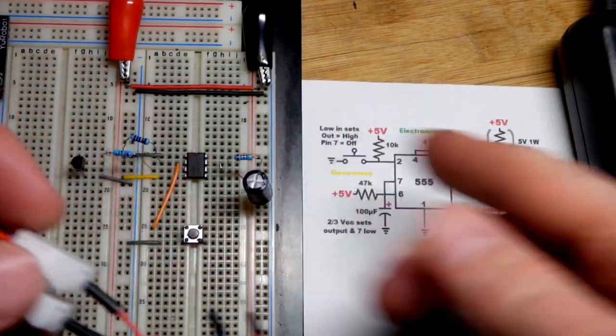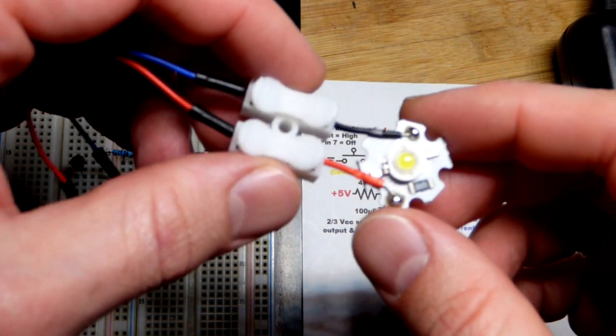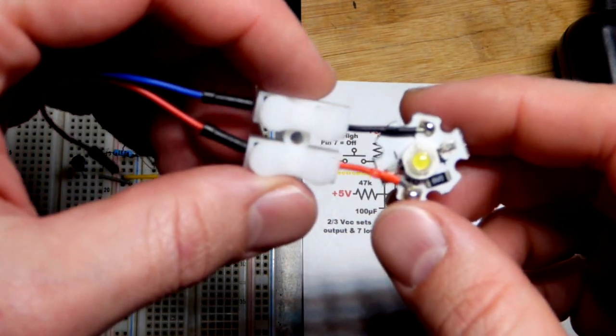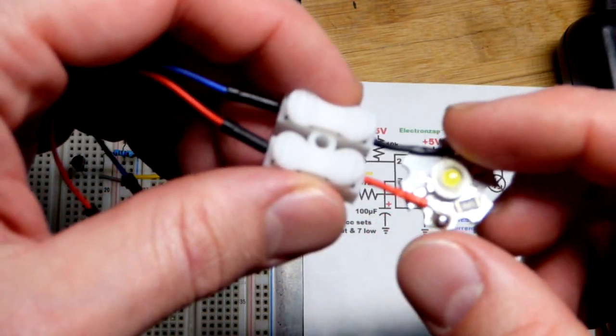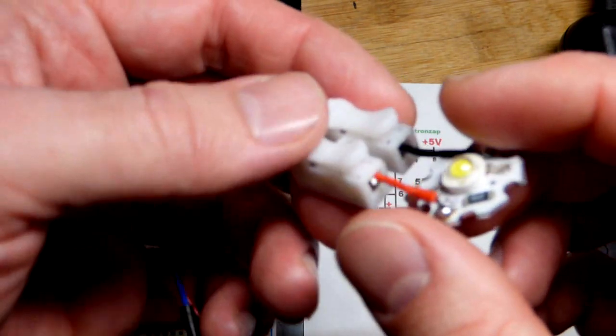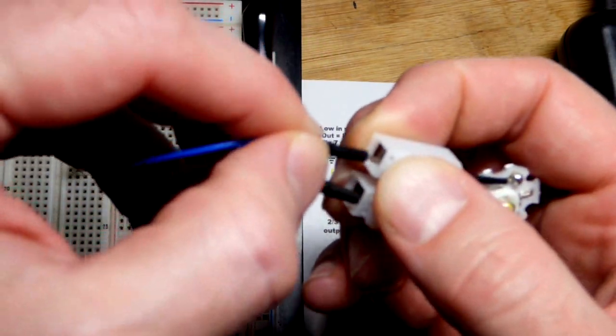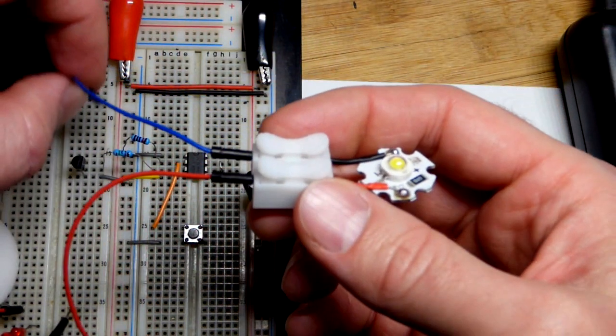So now in this video we're going to look at a circuit I came up with to use with the 5 volt LED right here, 1 watt LED I should say. I soldered on wires to the module there. It has a resistor to limit current with 5 volts.